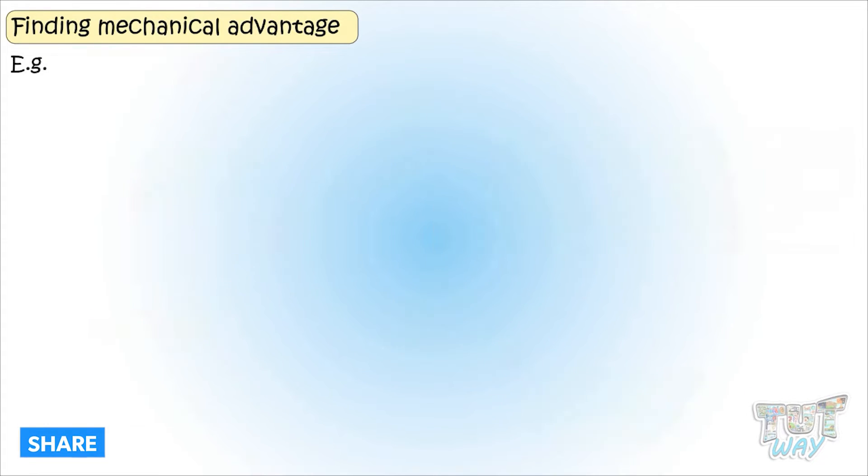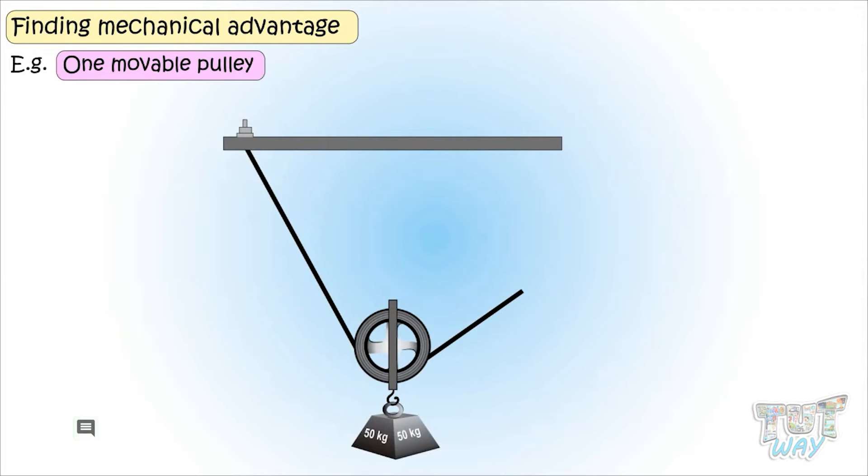Next, we have one movable pulley. That is, pulley is not fixed. One end of the rope is fixed and the other end is required to be pulled by any person, and pulley is in the center.